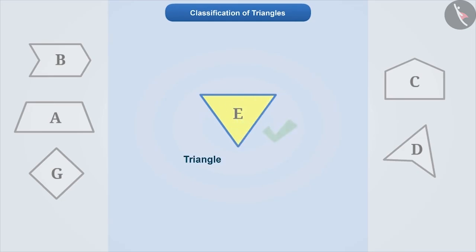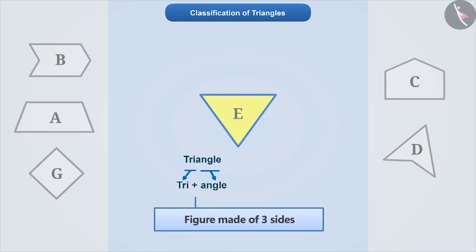To correctly identify a triangle, it is important to understand its concept correctly. Triangle is made of tri plus angle, which means a figure that is made of three sides. Therefore, we can say that a figure that is made up of three sides is called a triangle. In the given figures, only E is made up of three sides. Therefore, only this is a triangle.